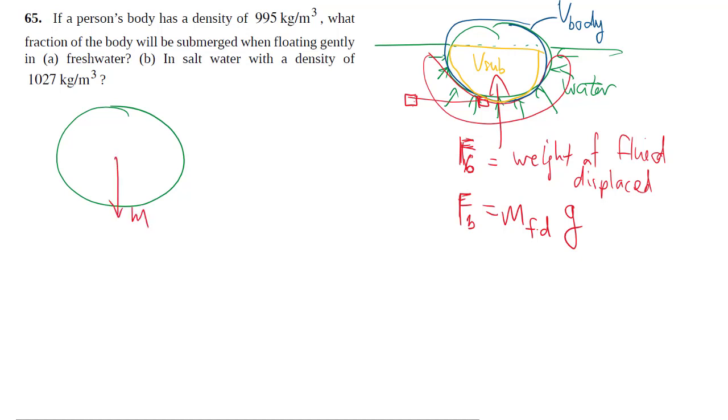A quick free body diagram of the object floating in the water: you've got the body weight, m_body·g, and then you have your buoyant force Fb. This thing is floating in water, so the sum of forces equals zero: Fb - m_body·g = 0.